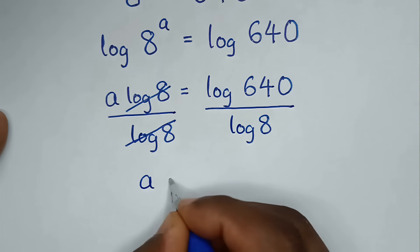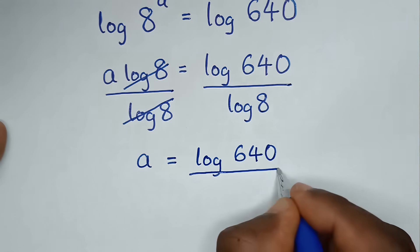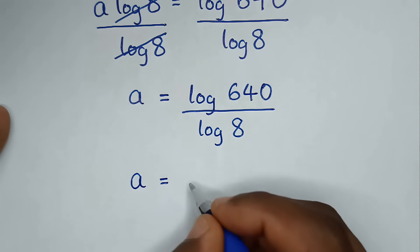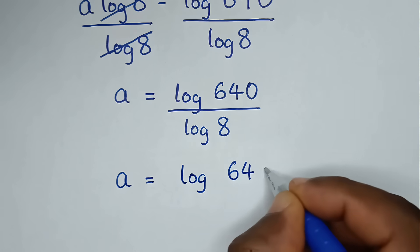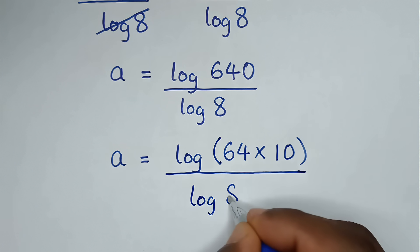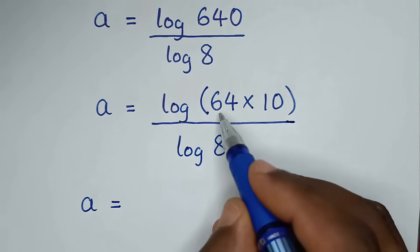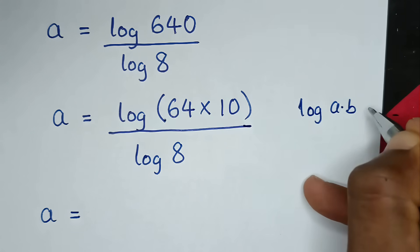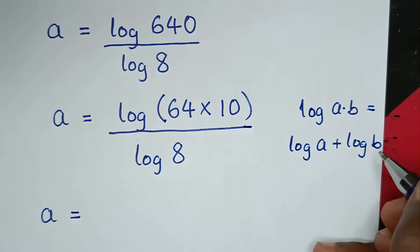Then it will be A is equal to log of 640 over log of 8. In the next step, log of 640 is the same as log of 64 times 10, over log of 8. This part is in the form of log of A times B which is equal to log of A plus log of B, so we will apply this form here.